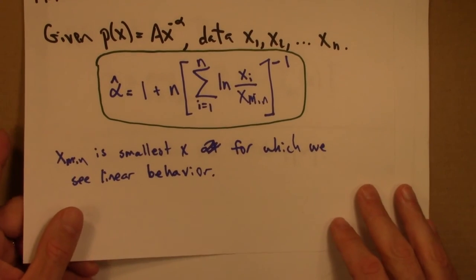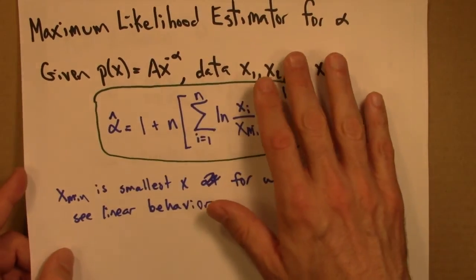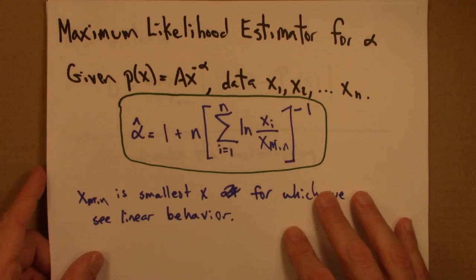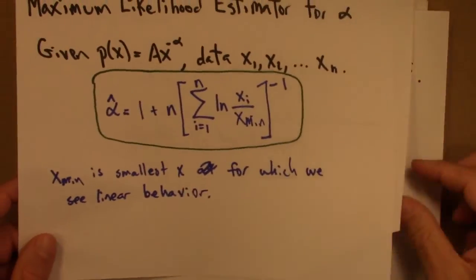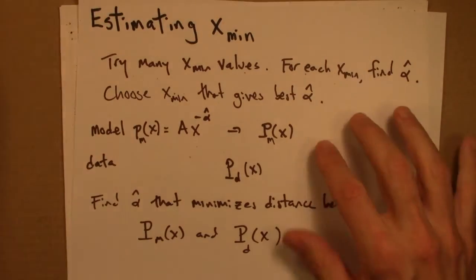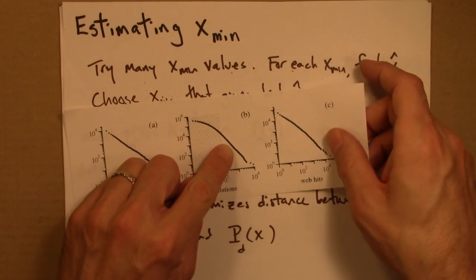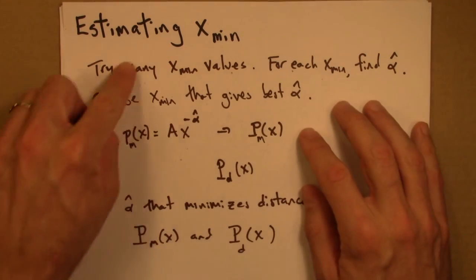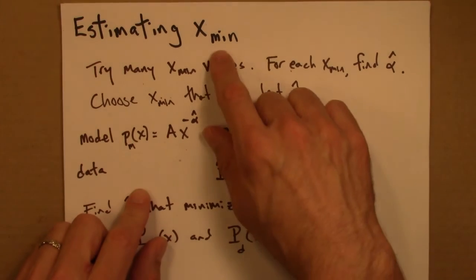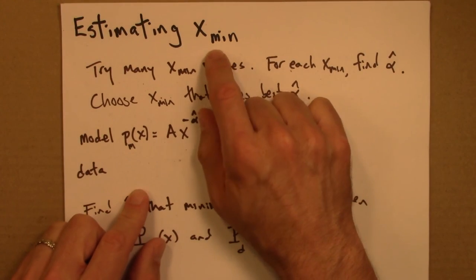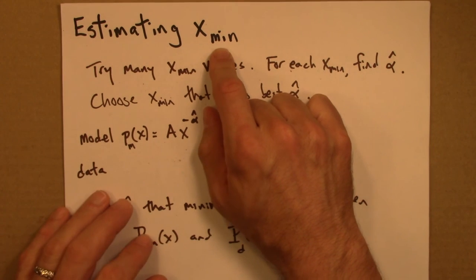And there's software available, some R packages, maybe Python, maybe Matlab, I forget, that will carry out this analysis for you. But the bottom line is that there is a principled way of estimating xmin, where this thing becomes sufficiently straight. It's done by this iterated procedure that's fairly straightforward on a computer. And that's the best approach that I'm aware of for estimating xmin, the lower cutoff for power law behavior.